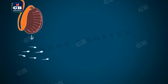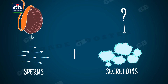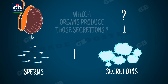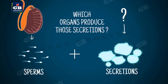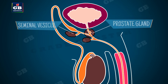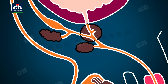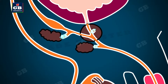Sperms produced in the testes need the support of fluid secretions to get delivered into the female reproductive system. The prostate gland and seminal vesicles secrete certain fluid secretions that provide nutrients to the sperm cells.